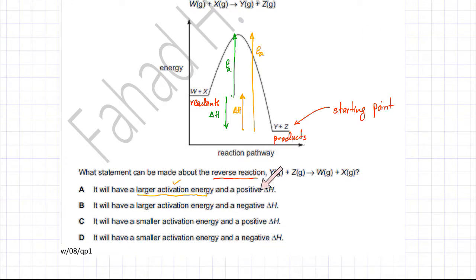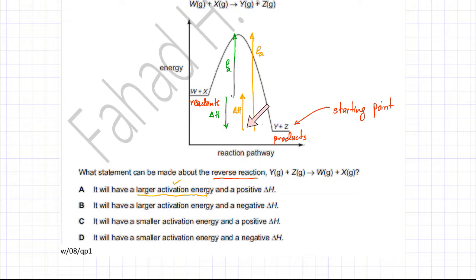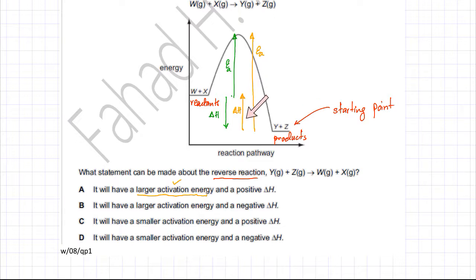The first statement also says the reverse reaction will have a positive enthalpy change. Going in the backward direction, the products have lower energy and the reactants have higher energy, so the arrow moves upward — the overall energy difference is positive because it is endothermic. The products gain energy to become reactants, so the enthalpy change is positive. Both parts of statement A are correct, making option A the correct answer.